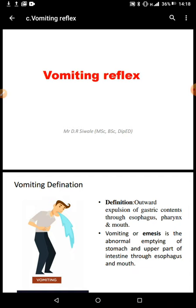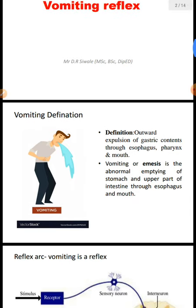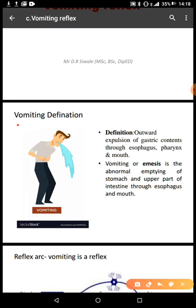What's the definition of vomiting? Vomiting is defined as an outward expulsion of gastric contents through the esophagus, pharynx, and mouth. Vomiting is also known as emesis. This is the abnormal emptying of the stomach and upper part of the intestine through the esophagus and mouth.